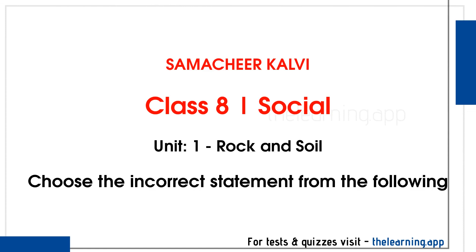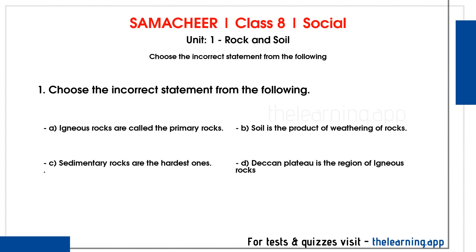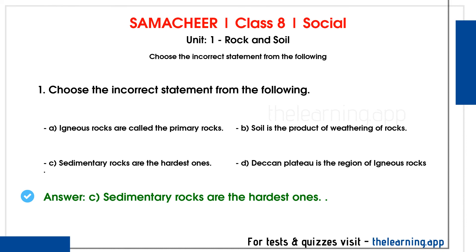Next, choose the incorrect statement from the following. Option A: Igneous rocks are called the primary rocks — this is correct. Option B: Soil is the product of weathering of rocks — this is correct. Option C: Sedimentary rocks are the hardest ones — this is incorrect, igneous rocks are the hardest. Option D: Deccan Plateau is the region of igneous rocks — this is correct. So the incorrect answer is option C.